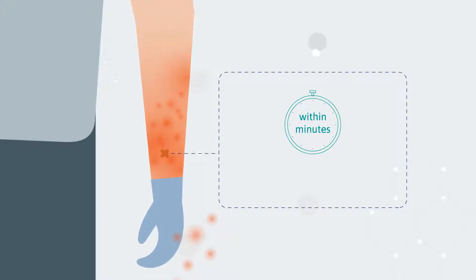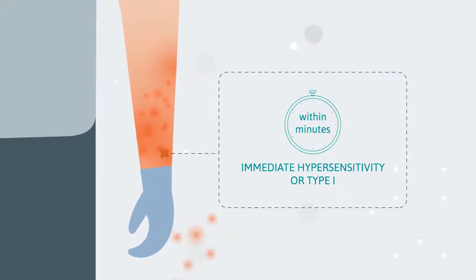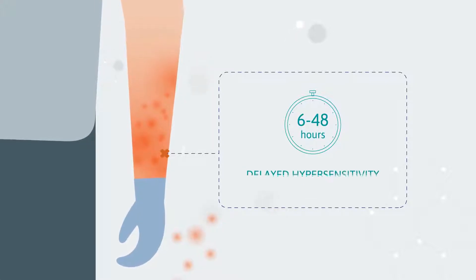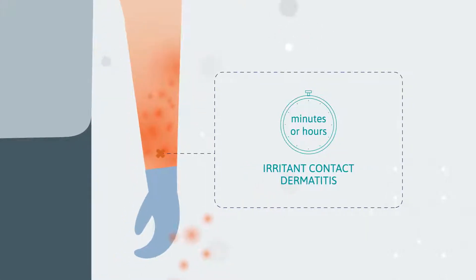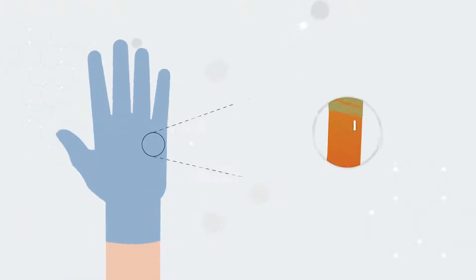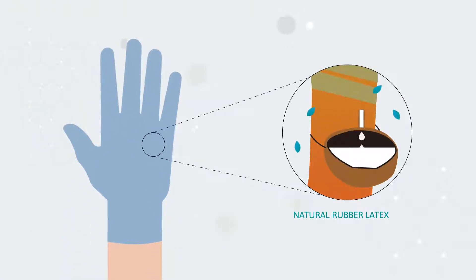Allergies from adverse reactions to glove products are generally classified into three distinct types: immediate hypersensitivity or type 1, delayed hypersensitivity or type 4, and irritant contact dermatitis. The use of gloves made from natural rubber latex or NRL